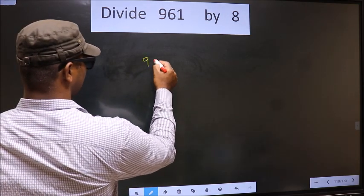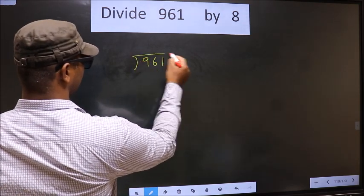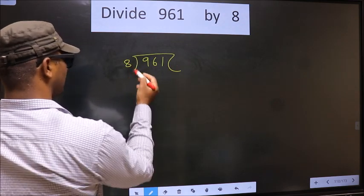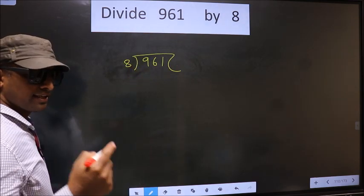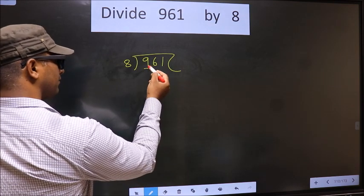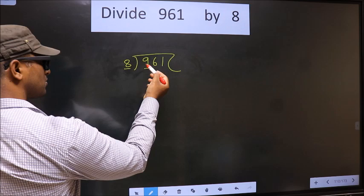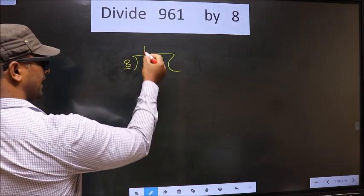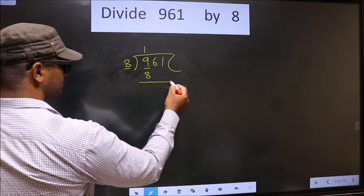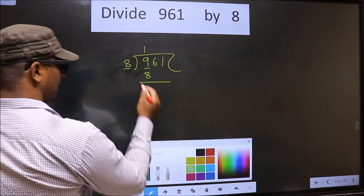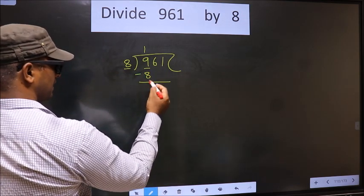That is 961, 8 here. Now here we have 9, here 8. A number close to 9 in 8 table is 8 once 8. Now you subtract. 9 minus 8, 1.